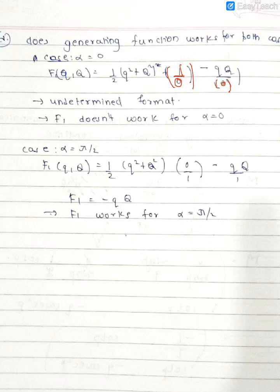When we put alpha equals pi by 2, my generating function becomes minus q times capital Q. Since it's a valid generating function, unlike what we get for alpha equals 0, F1 is valid in case of pi by 2. So my generating function works for alpha equals pi by 2. This is what we can compute.